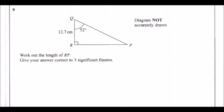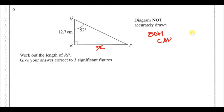Number 9: we have a right-angle triangle with an angle of 52° at Q and a vertical length of 12.7. We need to find the length RP — call it x. This is a standard SOH CAH TOA problem since we have an angle and two sides, and of course it's right-angled.